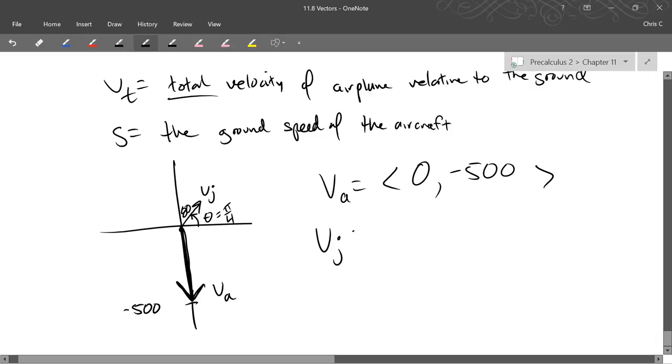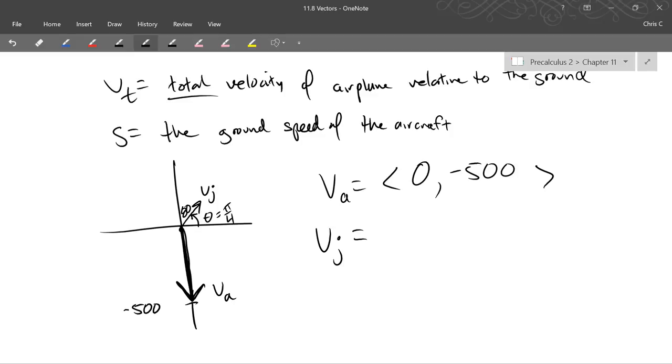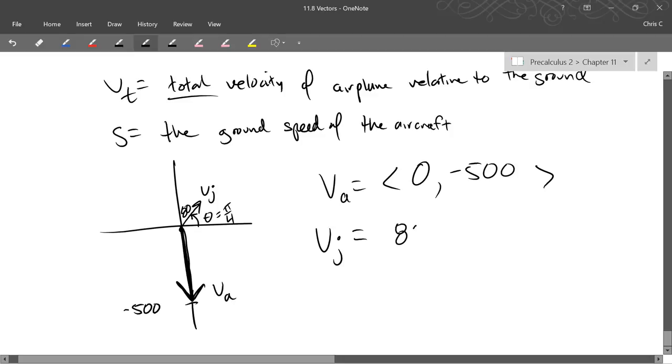VJ is a little more tricky. Do we know the x and y coordinates of VJ? Not really. We know the polar version, though. So let's write the polar version. So we're going to go with 80 times cos pi over 4, sine pi over 4.